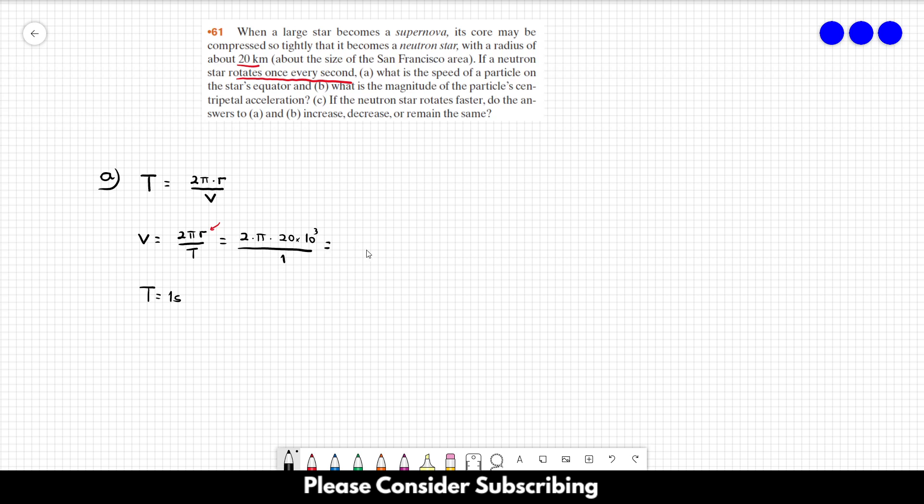So it's going to be 2 times pi times 20 times 10 cubed over 1, and this gives us 1.3, roughly, times 10 to the 5 meters per second. So that's the answer of letter A.